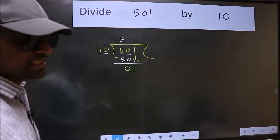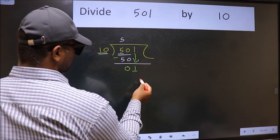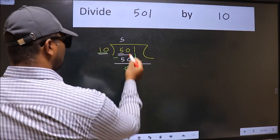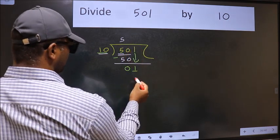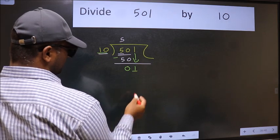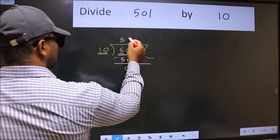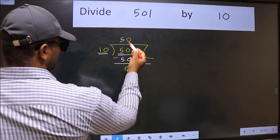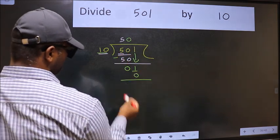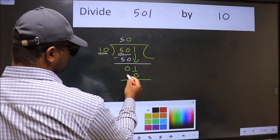what you should think of doing is which number should we take here. If I take 1, we will get 10. But 10 is larger than 1. So what we should do is we should take 0. So 10 into 0, 0. Now we should subtract.